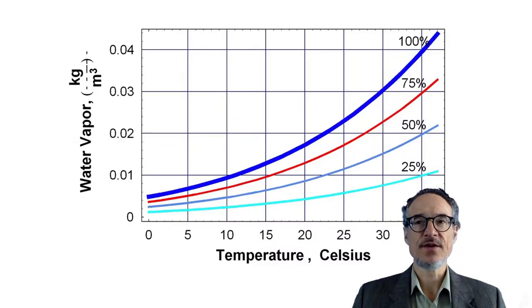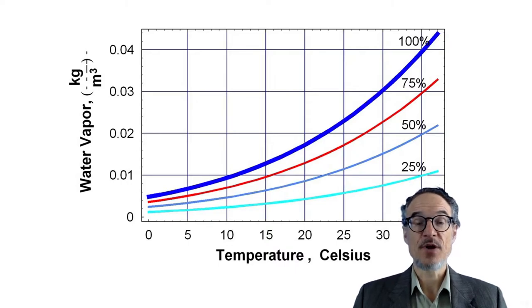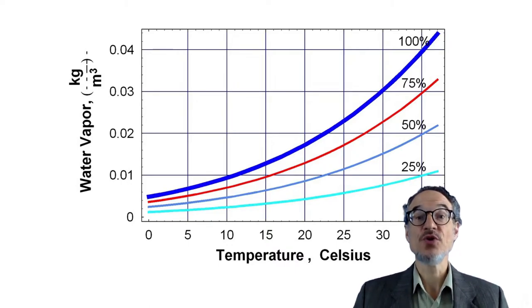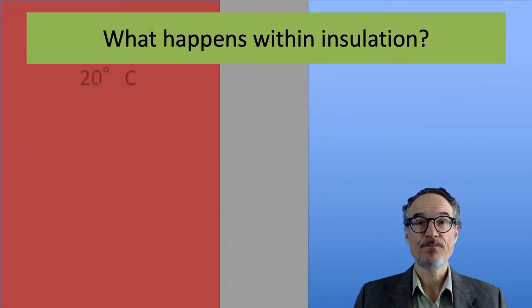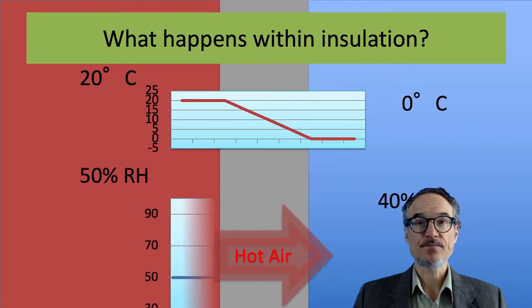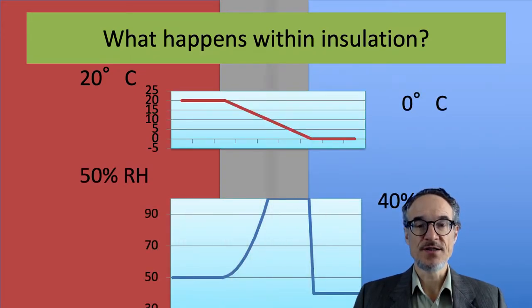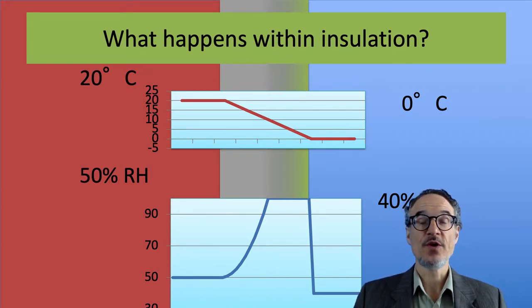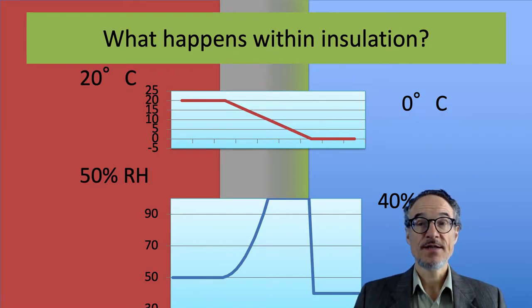What will happen is that in the winter, the air inside has much more humidity than the air outside in absolute humidity. So as the hot air leaves, the temperature drops, the relative humidity goes up, and we're in danger of the walls having condensation inside.